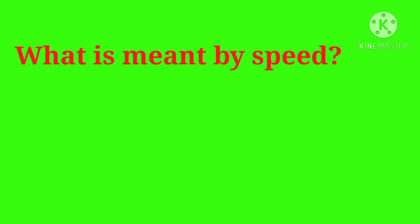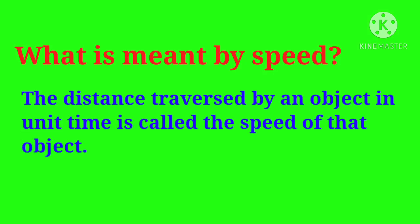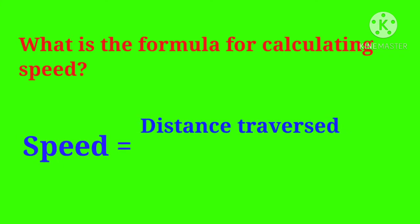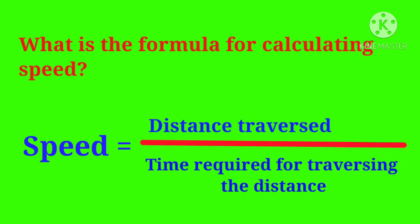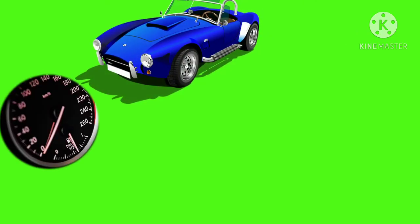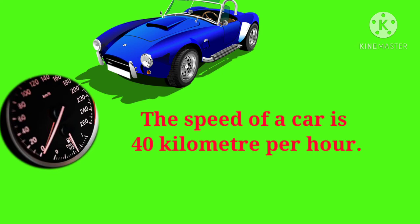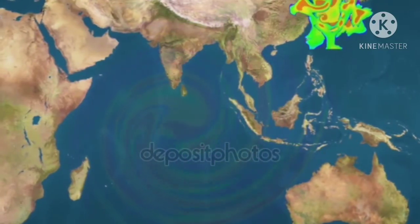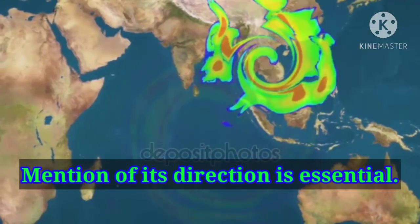Speed and velocity: What is meant by speed? The distance traversed by an object in unit time is called the speed of that object. The formula for calculating speed is: Speed = Distance traversed / Time required for traversing the distance. When we say that the speed of a car is 40 km per hour, there is no need to specify the direction. But to predict whether a storm will reach a particular place or not, a mention of its direction is essential.